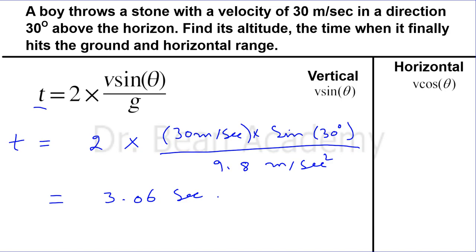Now if I ask you to find all of these three quantities - altitude, the time when it finally hits the ground, or horizontal range - for the angle 45 degrees, or if I say find all of these quantities if the angle of projection is 60 degrees or any other value, it should be easy to solve, right? I am sure you can solve it yourself.